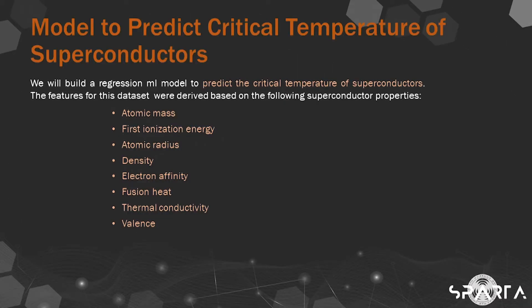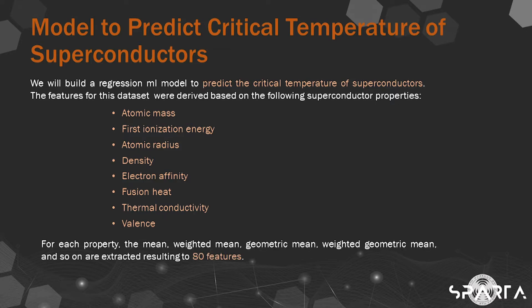This week, we will build a regression machine learning model to predict the critical temperature of superconductors. The features for this dataset were derived based on superconductor properties, and for each property the mean, weighted mean, geometric mean, weighted geometric mean, and so on are extracted, resulting in 80 features.